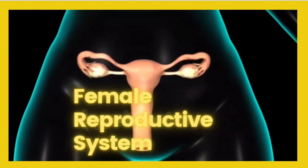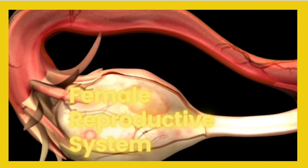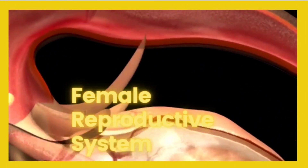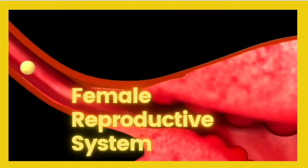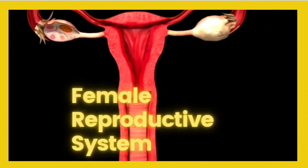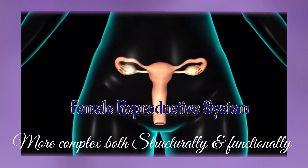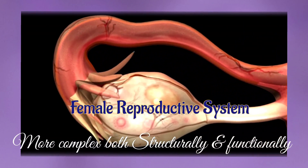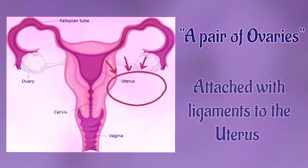In this video we will see the structure and functioning of the human female reproductive system. The female reproductive system is more complex both structurally and functionally. It consists of a pair of ovaries attached with ligaments.